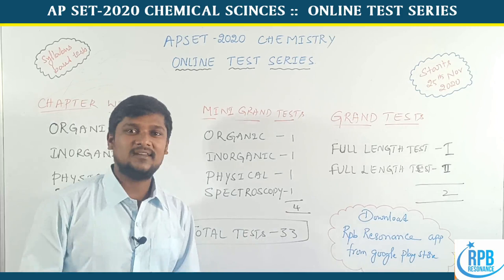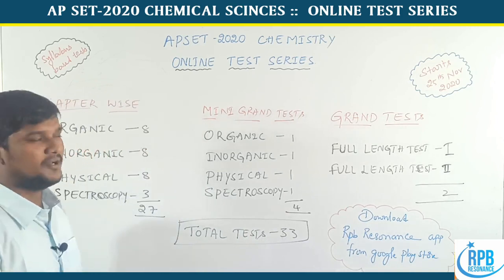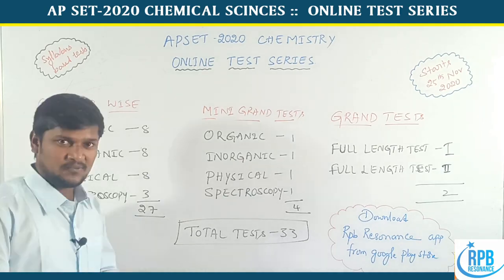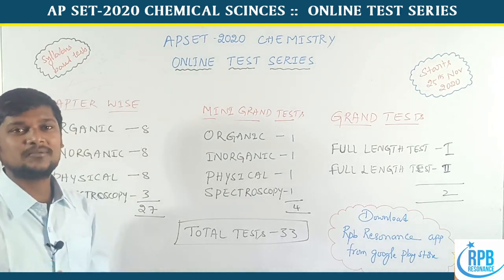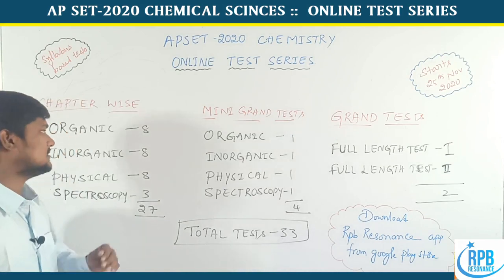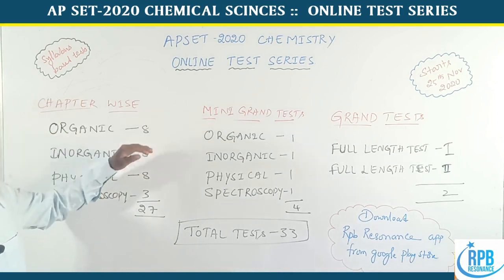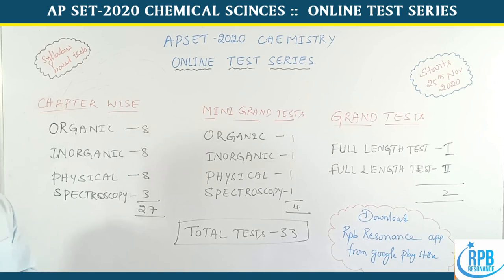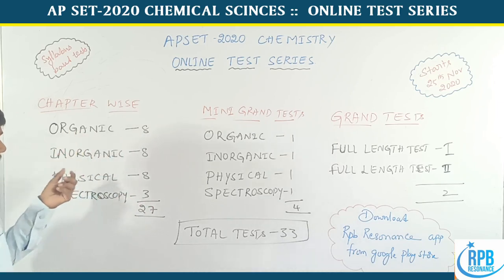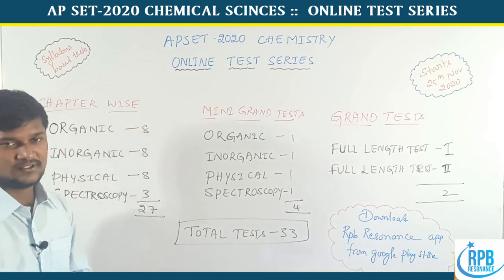The test series covers the full email content. We will briefly go through this. Chapter-wise test series includes organic, inorganic, and physical chemistry. The chapter-wise tests cover organic, inorganic, and physical — totaling 24 tests in those three areas.